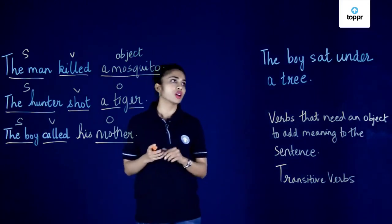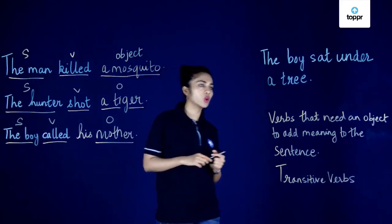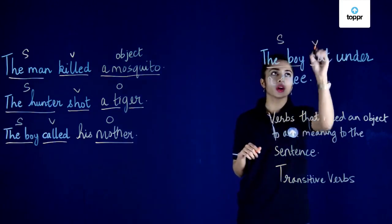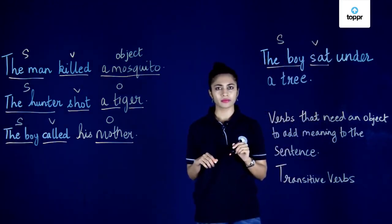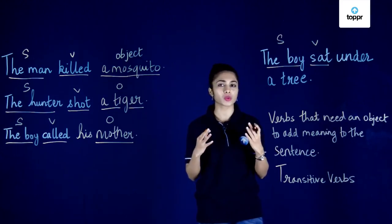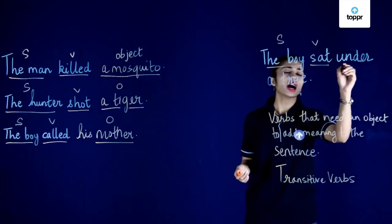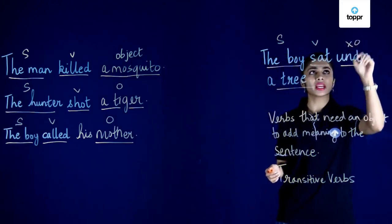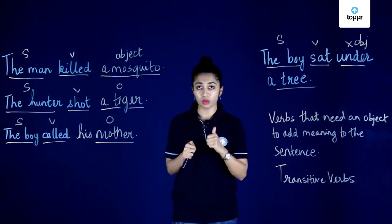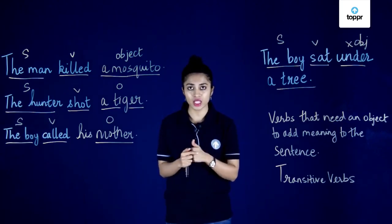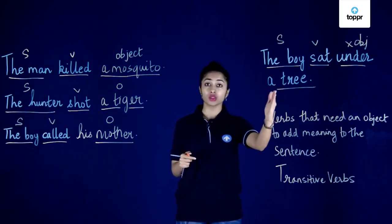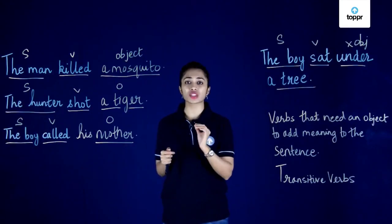Let's take a look at this sentence: 'The boy sat under a tree.' Who sat under a tree? The boy sat — so 'boy' is our subject and 'sat' is our verb. Does that mean 'under a tree' is our object? The boy sat what? The boy sat whom? We are not getting an answer to these questions, and therefore 'under a tree' is not an object — it's simply a prepositional phrase. The thumb rule to find the object in a sentence is to ask the verb the question 'what' or 'whom.'